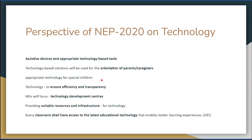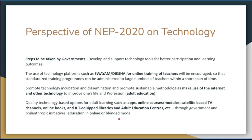Appropriate technology has to be used for special children. To ensure efficiency and transparency in use — if you want to make your school or university efficient and transparent, you can make use of technology. It is saying that technology development centers have to be created in all higher educational institutes, providing suitable resources and infrastructure, and classrooms shall have access to the latest educational technology.